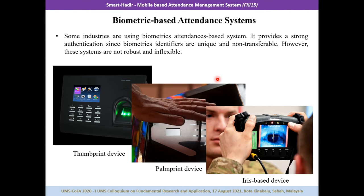The fourth is biometric-based attendance systems. Fingerprint devices, face recognition devices, and iris-based devices are the most commonly used devices for attendance management systems. Biometric recognition technology has been widely used for decades for capturing staff attendance, with fingerprint devices being the most common. There are also face recognition, iris-based, voice recognition, and thumbprint devices, but these are seldom found in the market due to high latency rates during recognition. Although very accurate, this system is inefficient in areas with a large number of participants such as universities, and these systems are very costly.